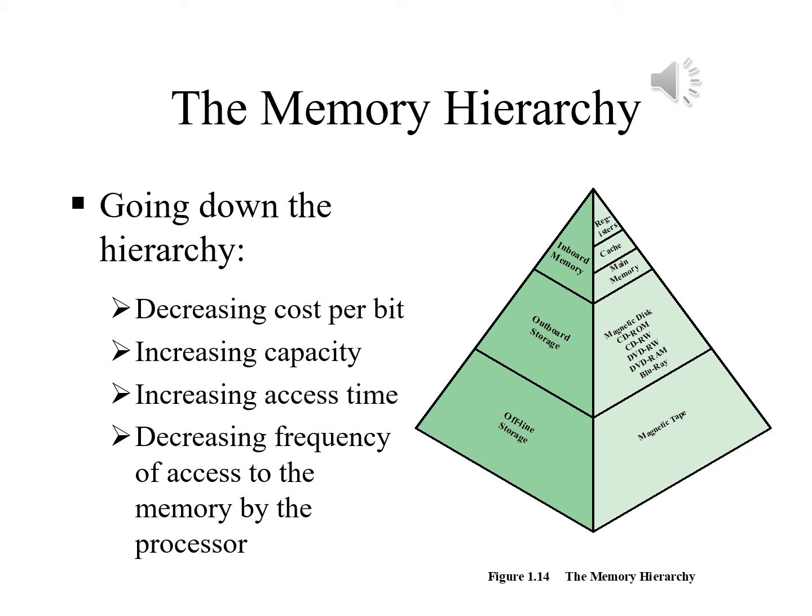A typical hierarchy is illustrated on the slide. As one goes down the hierarchy the following occur: decreasing cost per bit, increasing capacity, increasing access time, and decreasing frequency of access to the memory by the processor. Thus smaller, more expensive, faster memories are supplemented by larger, cheaper, slower memories. The key to the success of this organization is the decreasing frequency of access at lower levels.